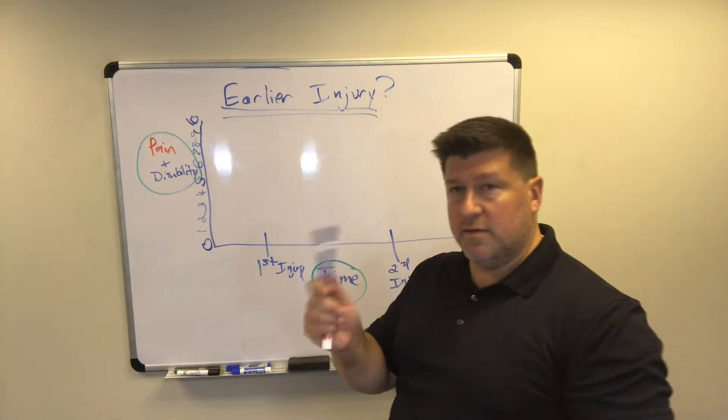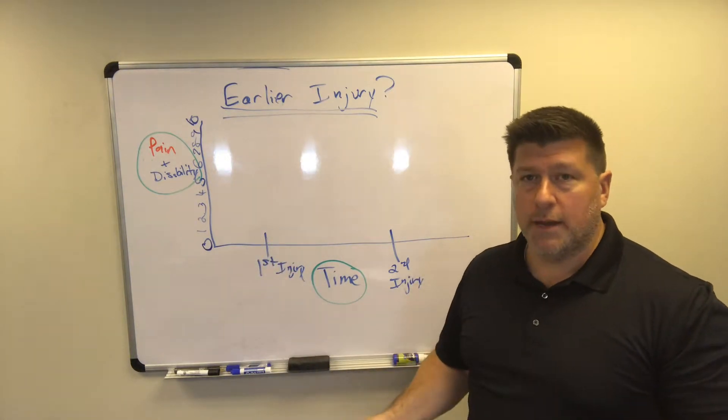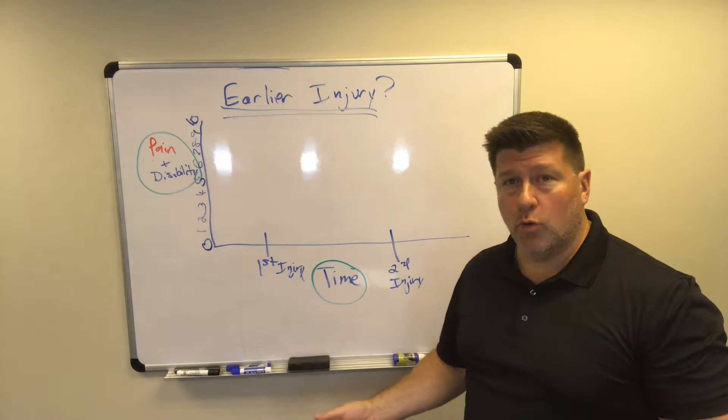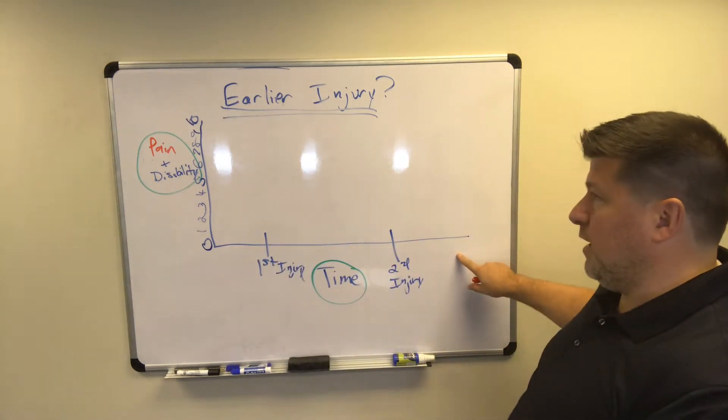And blue will be disability. Disability meaning you can't do things with your body, you can't work, you can't do your work activities. And then this bottom line is over time.